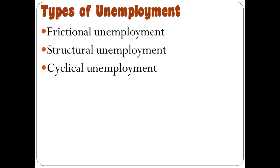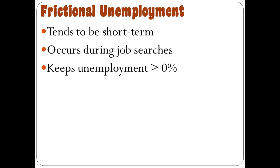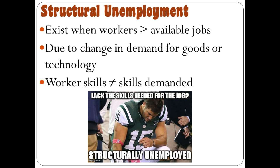When it comes to unemployment, there are three different types: frictional, structural, and cyclical. Frictional unemployment tends to be short-term — people moving from one job to the next, such as recent college graduates looking for their first job. This ensures unemployment is always greater than zero even at full employment. Structural unemployment exists when there are more workers than available jobs, often due to changes in demand, technology, or workers lacking the skills needed, so their labor is not currently needed.